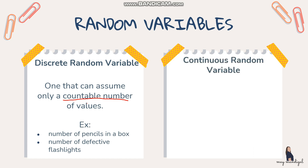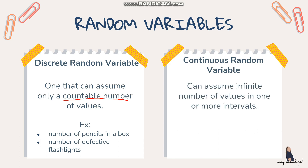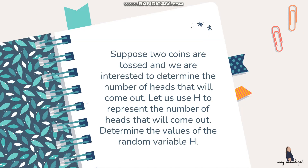The second type is the continuous random variable, which can assume an infinite number of values in one or more intervals. In short, these are numbers that cannot be counted or involve decimals. Examples include the length of wire ropes, such as 4.5 meters, and the weight of professional boxers.